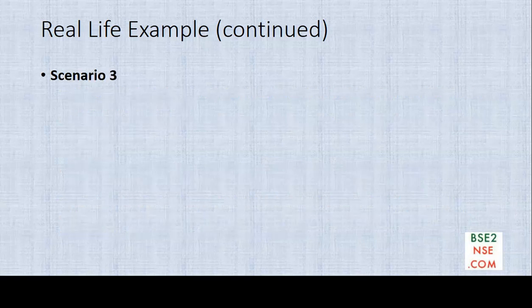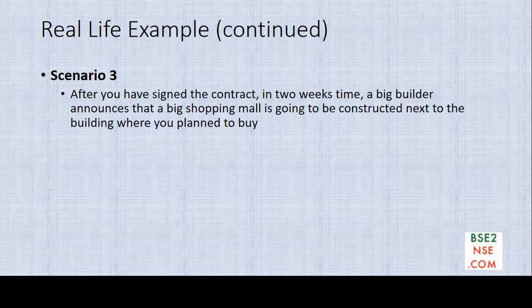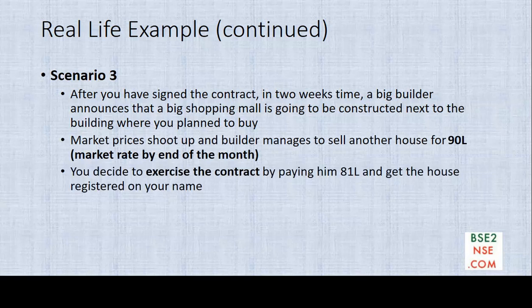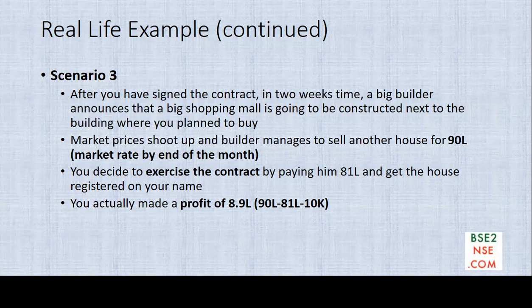Scenario 3: after you have signed the contract, in two weeks' time a builder announces that a big shopping mall is going to come in that area. So real estate prices appreciate much higher than anticipated — say the price goes to 90 lakhs. You have signed the contract for 81 lakhs, so you go ahead and exercise the contract and get the house registered by paying just 81 lakhs. Your actual profit is 8.9 lakhs — the difference between 90 lakhs (current market rate) and your contract rate of 81 lakhs — minus the 10,000 already paid. So 8.9 lakhs is the total profit.